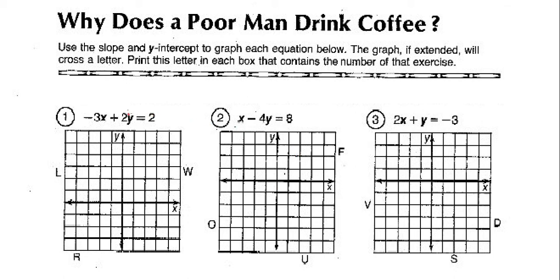Question number one. We always want y to be on one side, so we want that equation of y = mx + b — that's the ideal situation we want to get it in. So let's add 3x to this side, and then let's divide everything by 2. That'll give us y = 1 + (3/2)x.